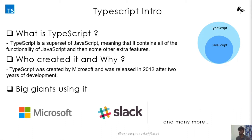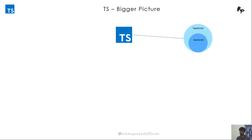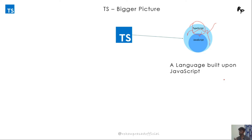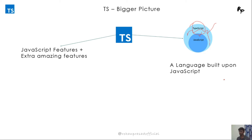Let's deep dive into TypeScript and understand how it is different from JavaScript and how JavaScript plays an important role in TypeScript. Consider a picture of TypeScript: TypeScript is a superset of JavaScript. The outer part represents the extra features that Microsoft built — they took JavaScript and added those features to make a new language known as TypeScript. So TypeScript is not a new language built from scratch; it is JavaScript with some extra features.